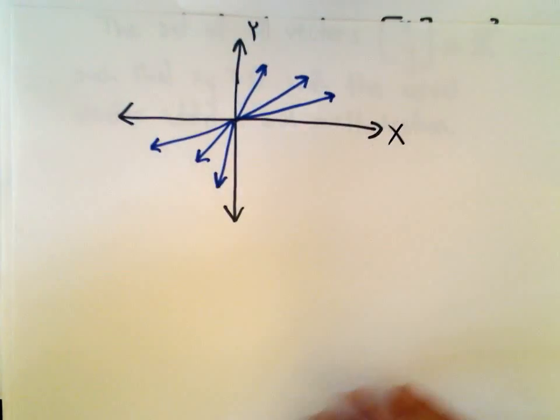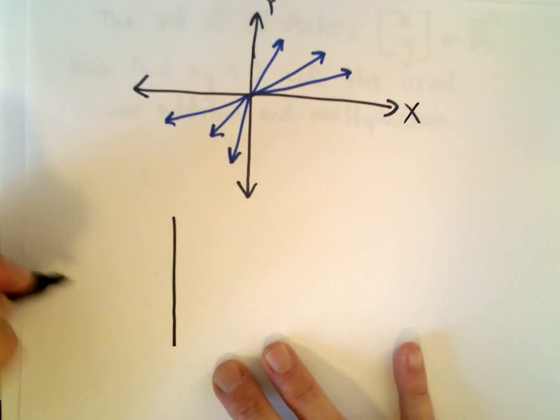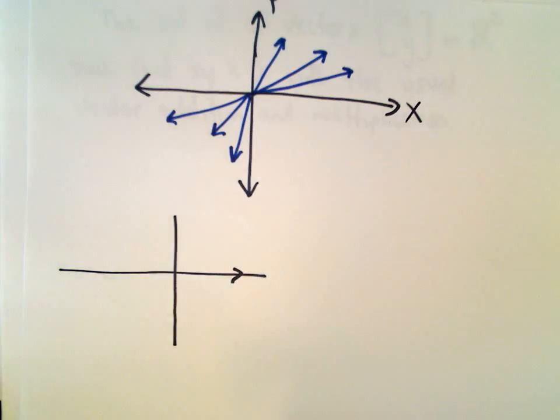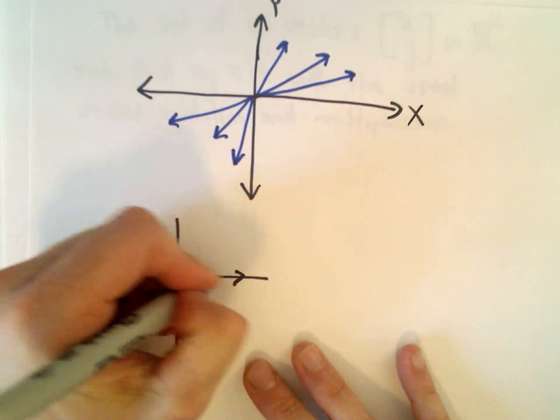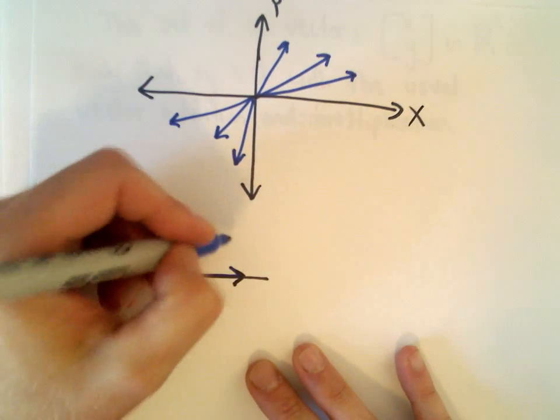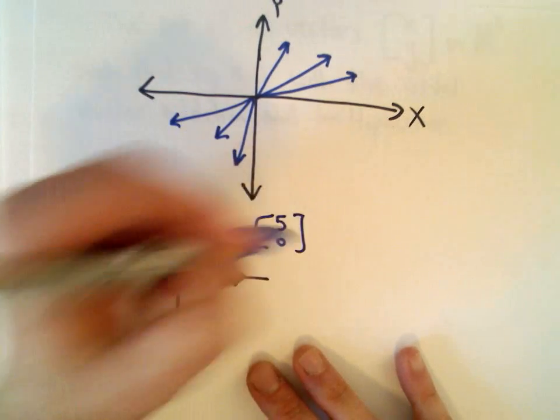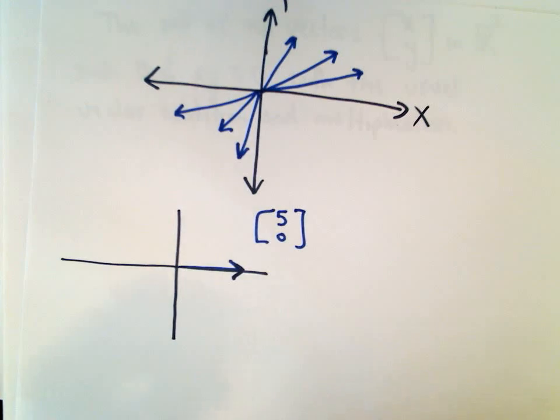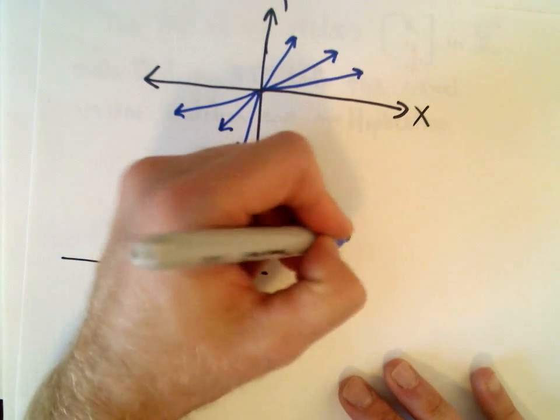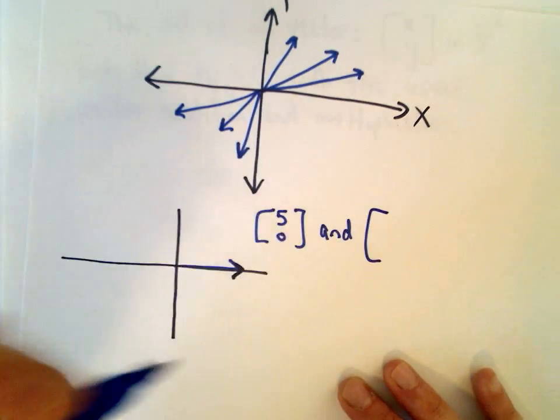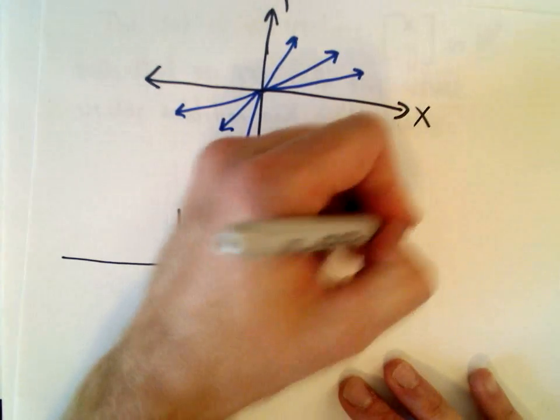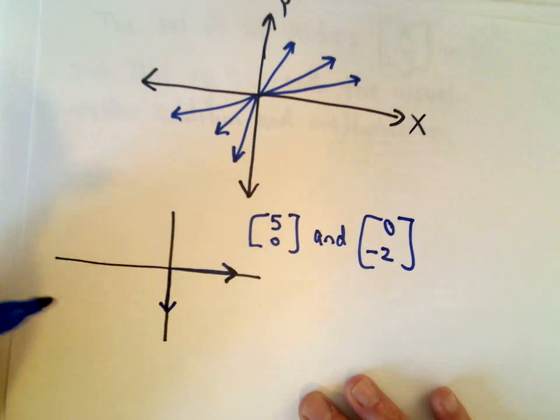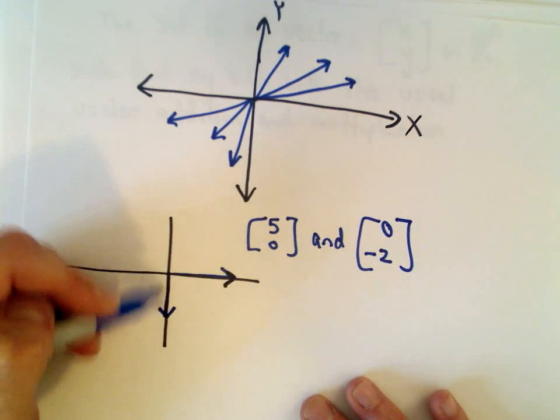So just a little counterexample. So let's consider the vector with components 5 and 0. So that would be the vector where you just go along the x-axis. And let's also consider the vector, say, with components 0 and negative 2. That's just going to be a vector along the negative y-axis.